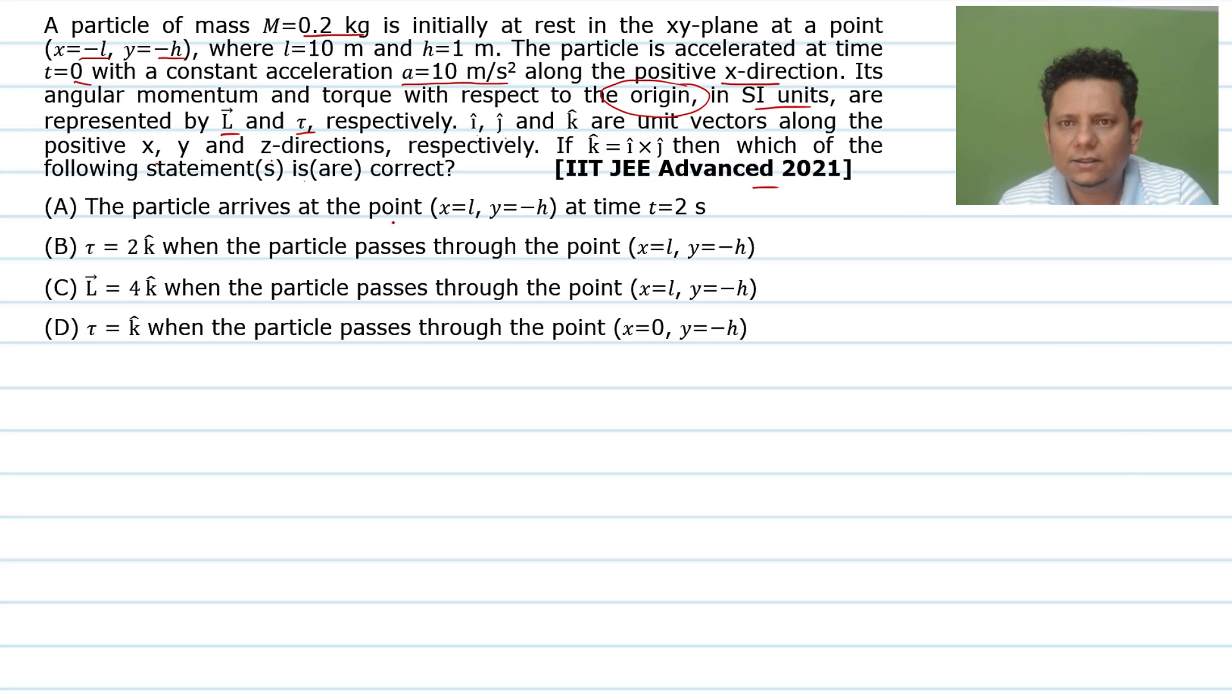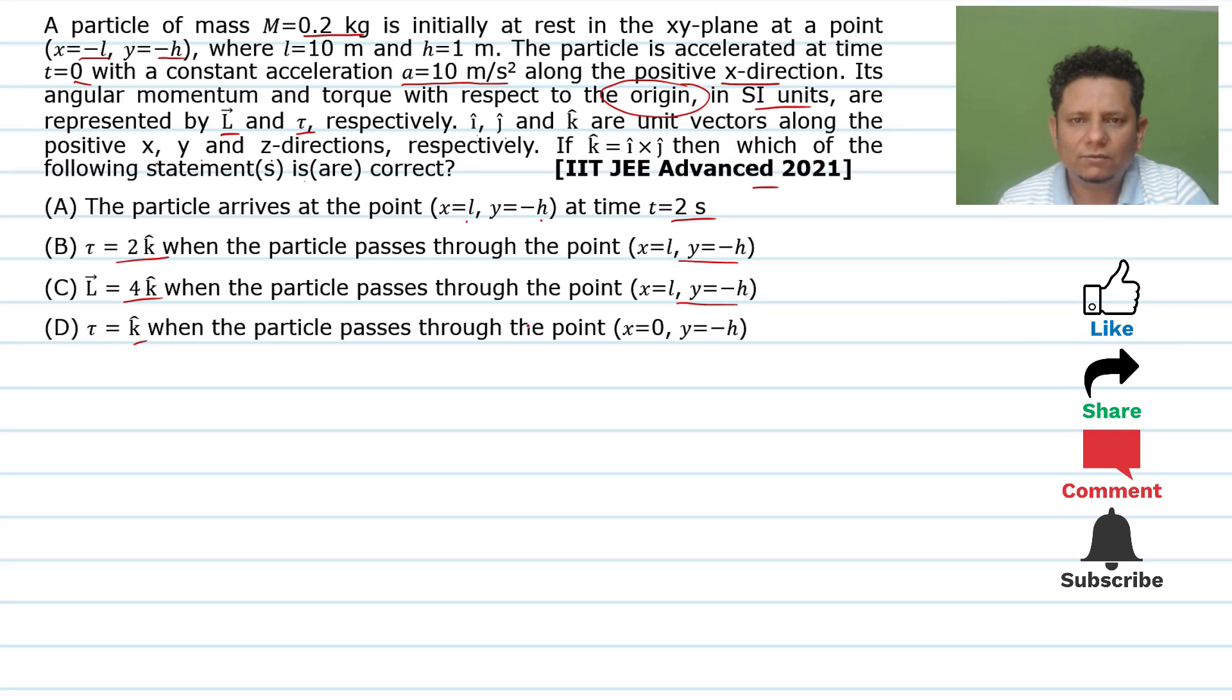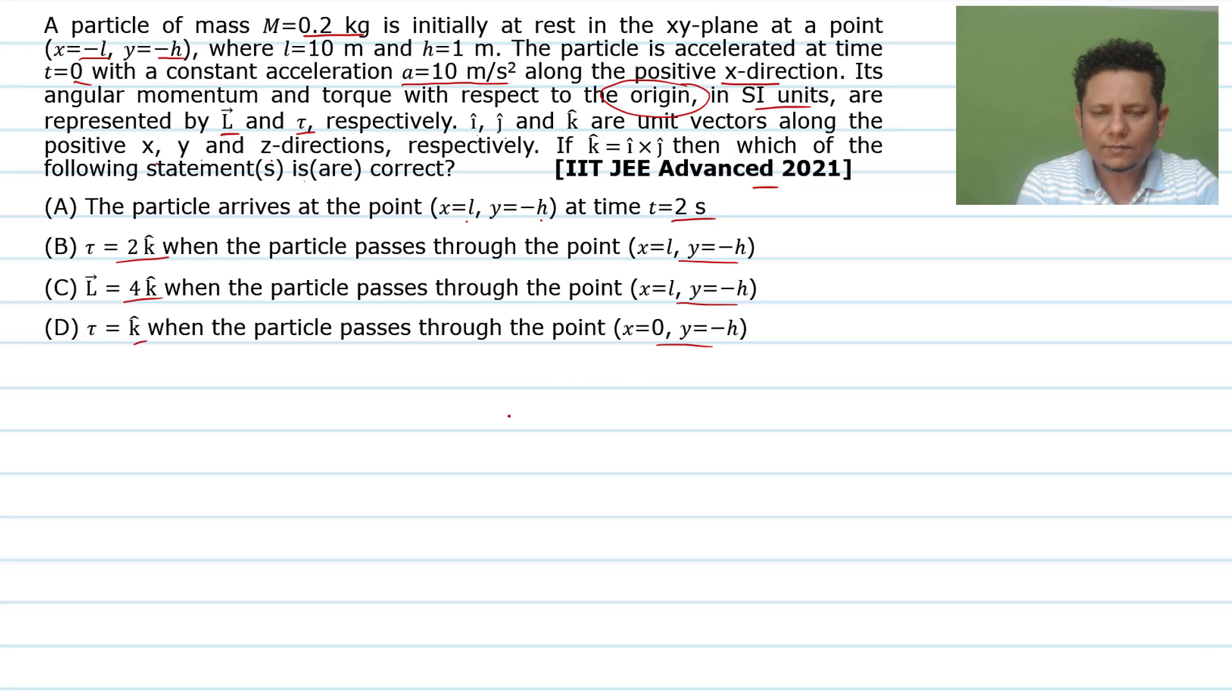Option A: The particle arrives at point (x=l, y=-h) at time t=2 seconds. Options mention torque value when particle reaches this point, angular momentum value when particle reaches this point, and torque when particle passes through another point. Now the scenario is that this is the origin O(0,0).